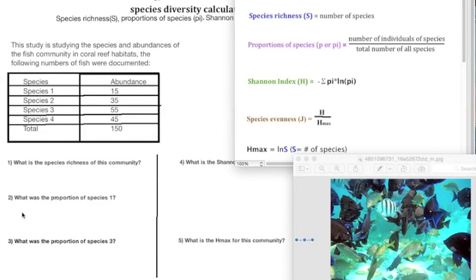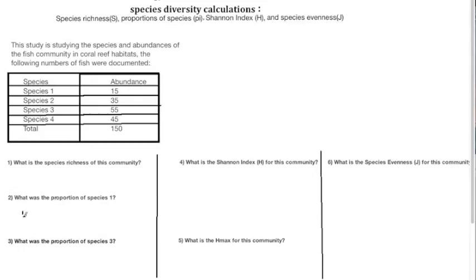For species 1, to find the proportion, we would take the number of individuals of species 1, which is 15, and divide that by the total number of individuals, which is 150. We would then get our proportion of species 1, which if you calculate that out, you get 0.1.